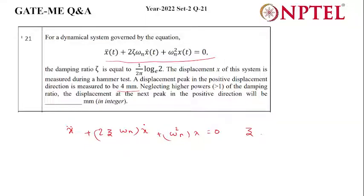So your damping factor is given as 1/(2π) ln 2. If you solve this you will get it as 0.11031. The initial peak is coming as 4 mm.